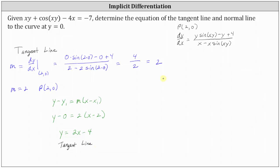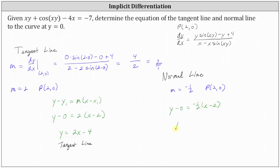Now let's determine the equation of the normal line. The normal line is perpendicular to the tangent line at the point of tangency. The slopes of perpendicular lines are negative reciprocals, so if the slope of the tangent line is two, then the slope of the normal line is negative one half. The normal line also passes through the point two comma zero. So the equation of the normal line is y minus zero equals negative one half times the quantity x minus two. Solving for y, we have y equals negative one half x plus one. This is the equation of the normal line to the curve at the point two comma zero.